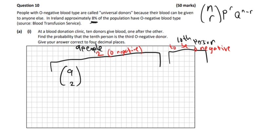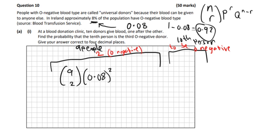The probability of them being O- — the 8%, so 8% as a decimal is 0.08. So it's times 0.08, and R is 2 here. So if the probability that they are O- is 0.08, you do 1 take away 0.08 and you get 0.92 — that's the probability that they're not O-. So that's Q here. And that will be to the power of 9 minus 2, which is 7.